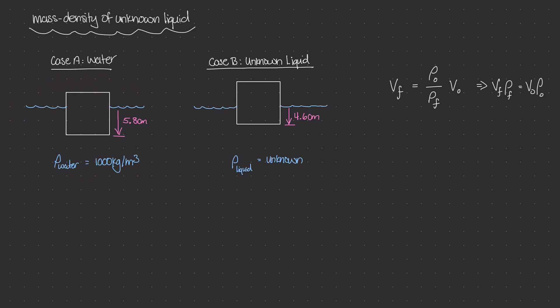The question asks: what is the mass density of this unknown liquid? Let's start with the knowns. In case A, the mass density of the water is 1,000 kilograms per meter cubed. In case B, the mass density is unknown. In case A, a certain volume of water gets displaced. We can determine that volume: the amount of fluid displaced is really the volume of the portion of the object beneath the surface of the water — this volume right here.